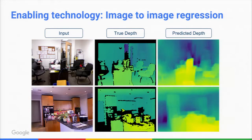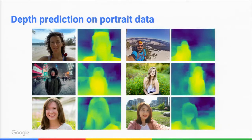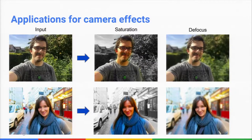You can take pairs of input images and depth readings and learn to predict depth. If you close one eye, you can still make an estimate of how far away something is even if you're not perfect — and similarly, a deep neural network can do the same thing. That also allows you to make better selfies, like blurring the background or colorizing only the foreground.